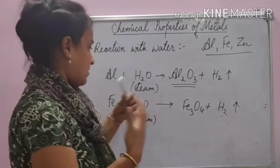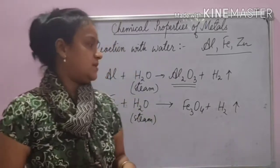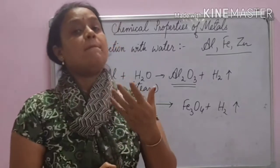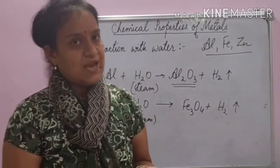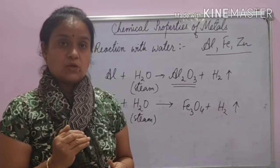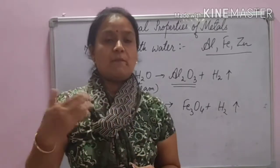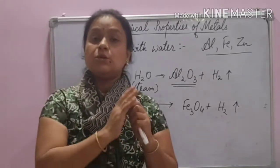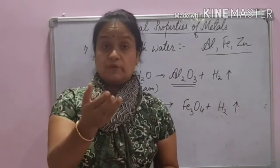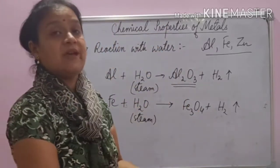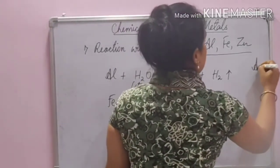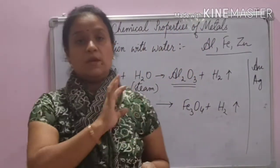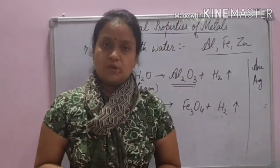The reactions have not been balanced — you can practice balancing them. Remember: whenever a metal reacts with water, it forms metal oxide and hydrogen gas; if the metal oxide is soluble in water, it further forms metal hydroxides, which are basic in nature and also called alkalis. Silver and gold, which are at the bottom of the reactivity series, will not react with water — even at high temperature or in steam form.